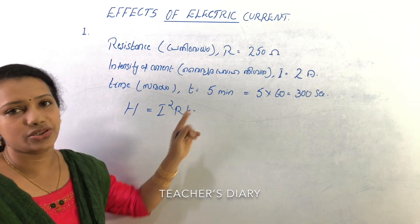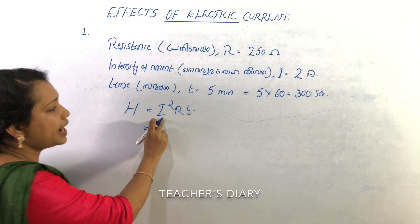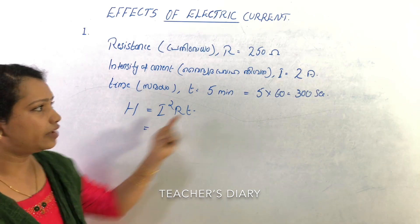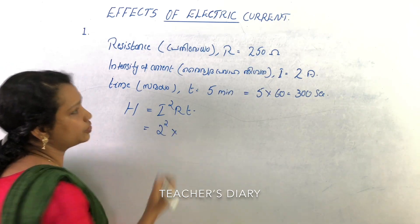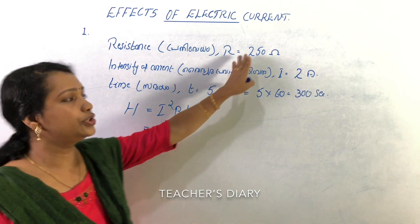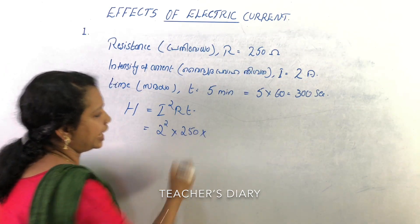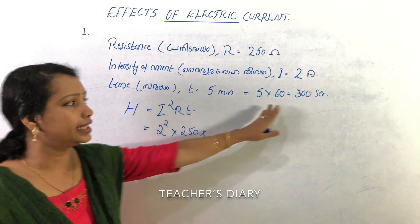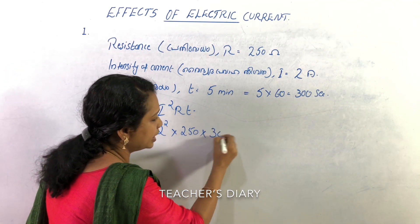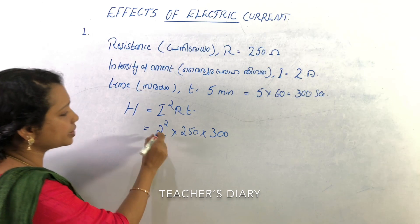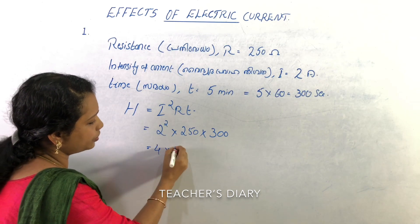H is equal to I squared R T. Now we substitute values. I value is 2 amperes, so 2 squared. Resistance is 250 ohms. Time is 300 seconds. So H = 2 squared into 250 into 300. 2 squared is 4, then 4 into 250 into 300.